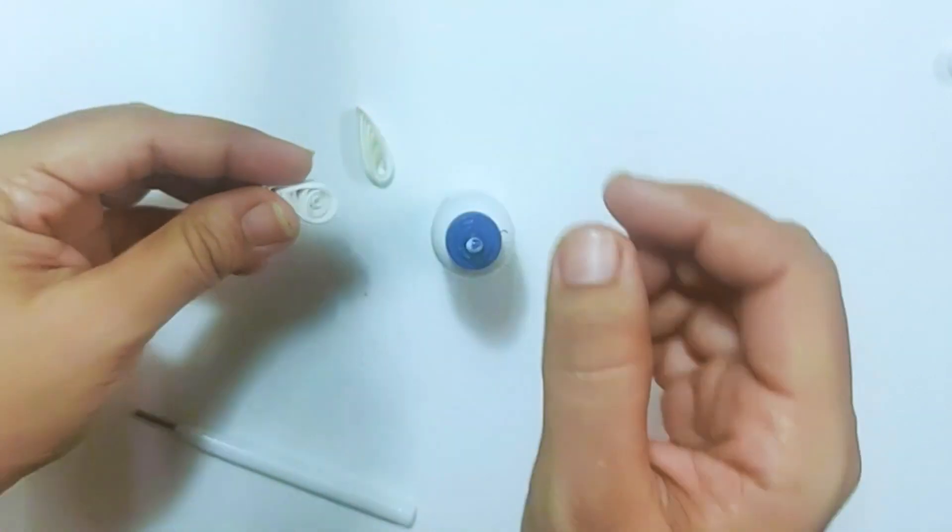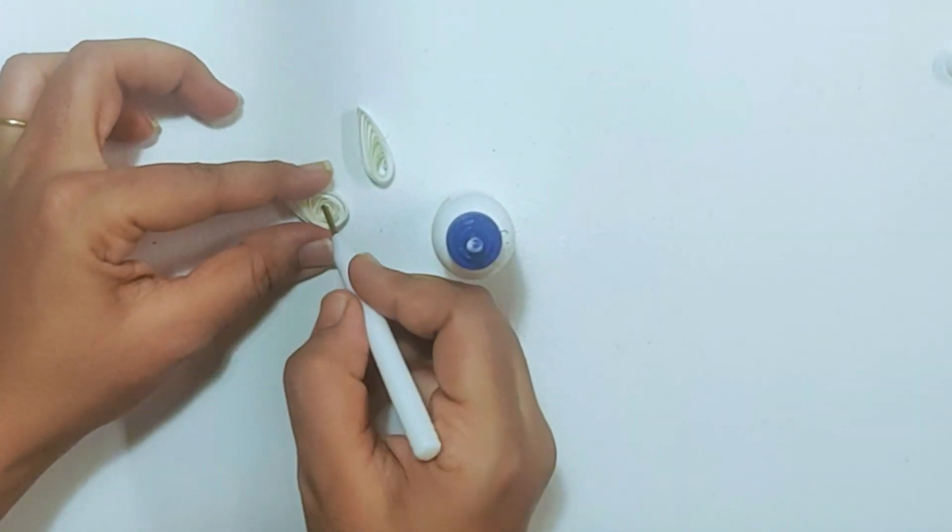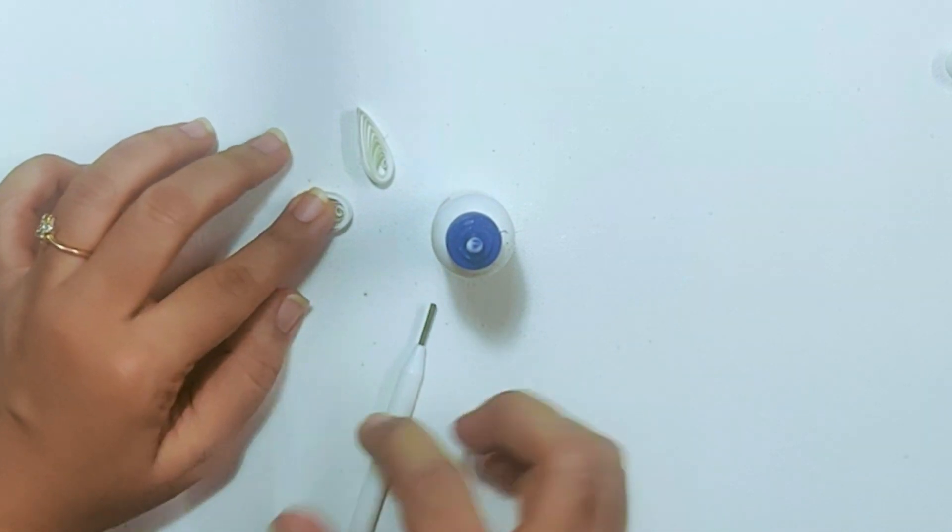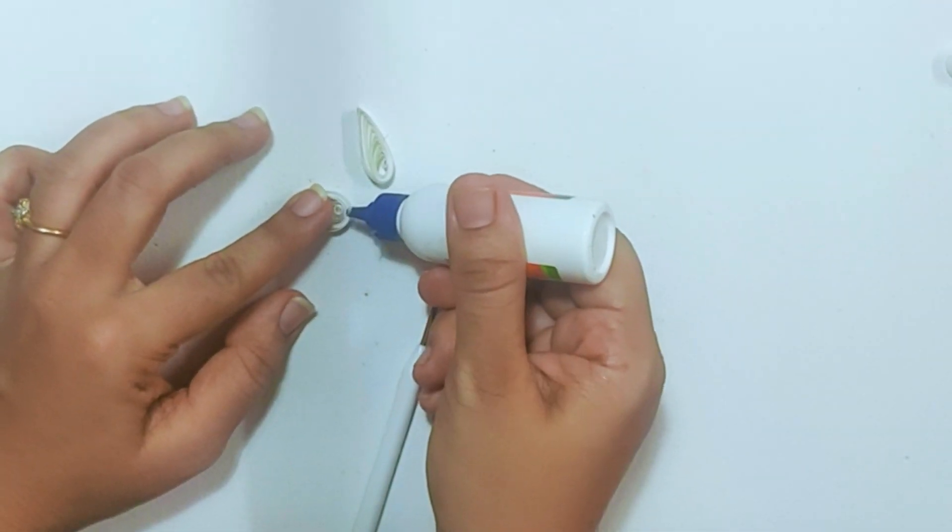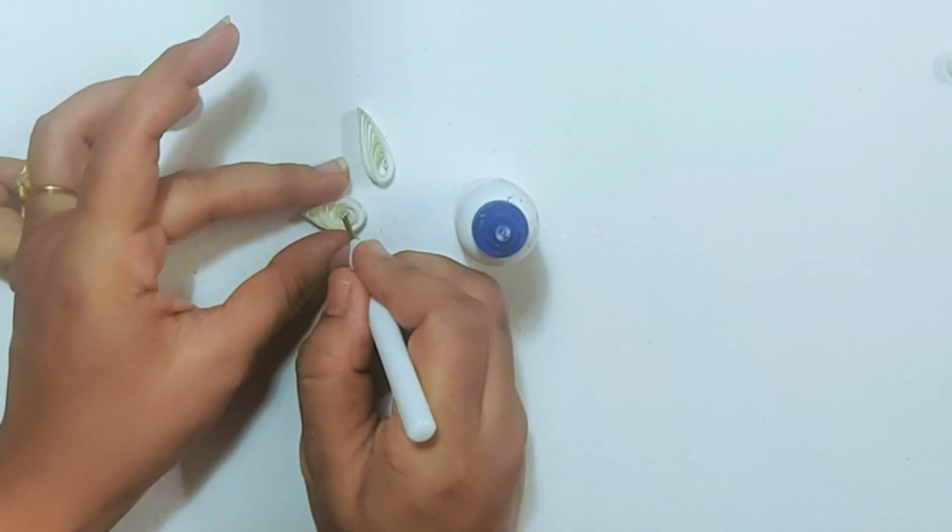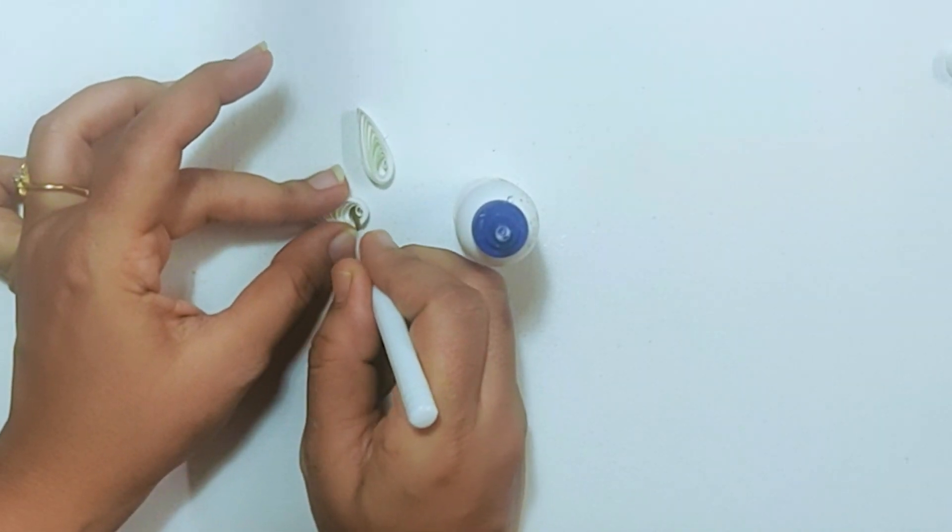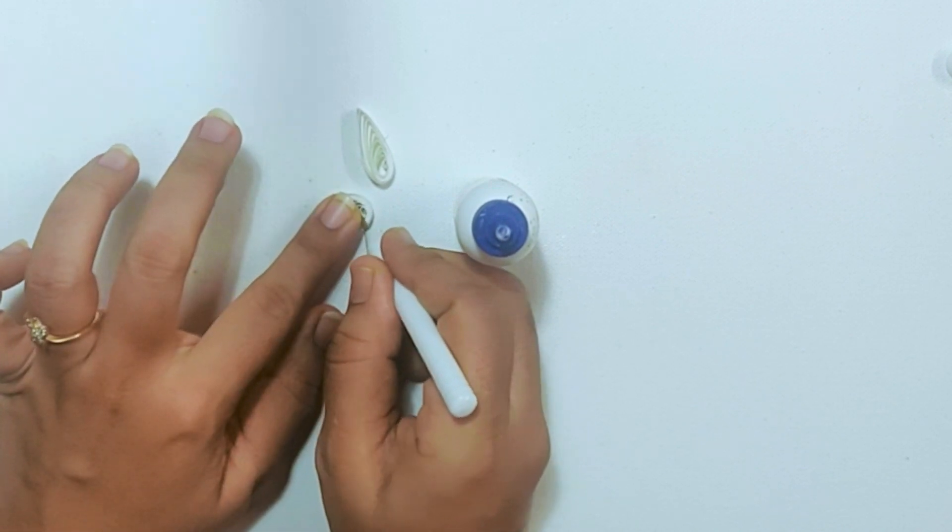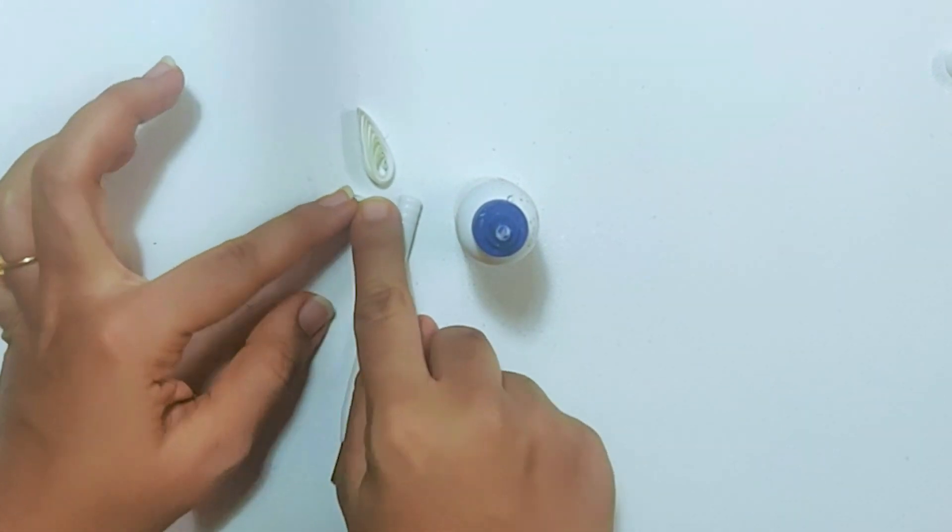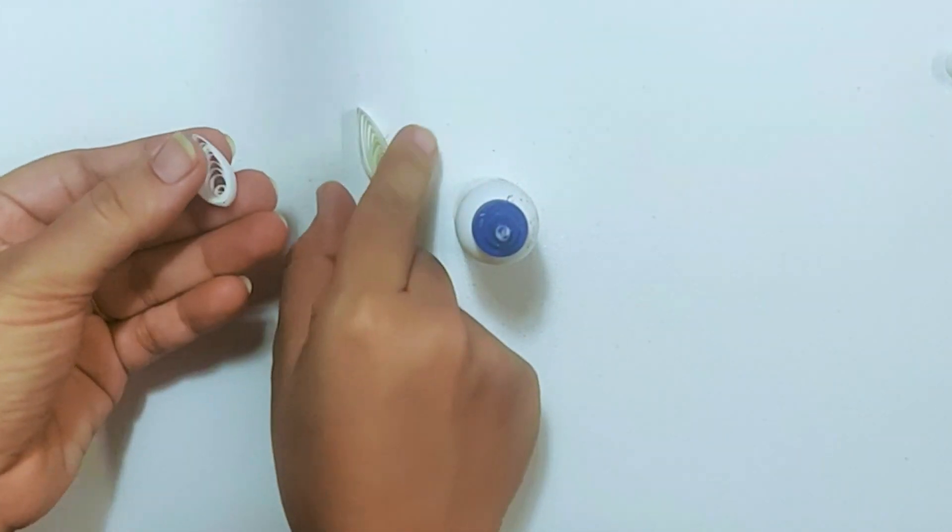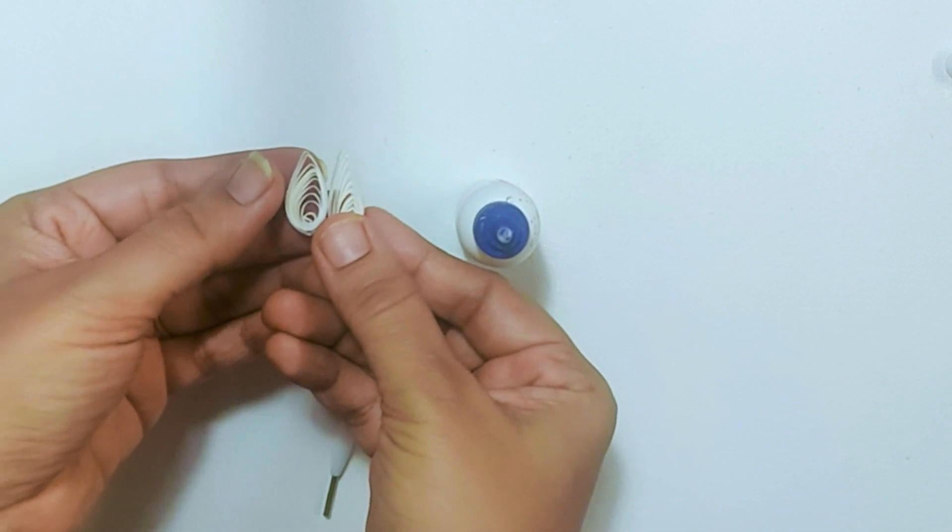Now secure the center to one of the sides and hold it tightly while applying some glue. Hold it firmly to the side. This is how the petal looks. Make more of the white petals and keep them ready.